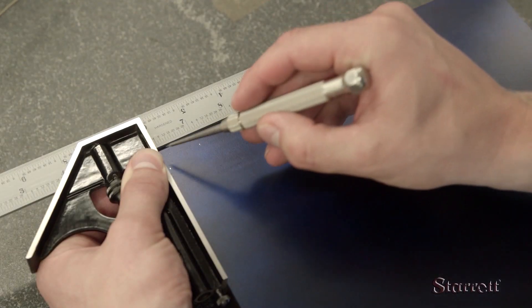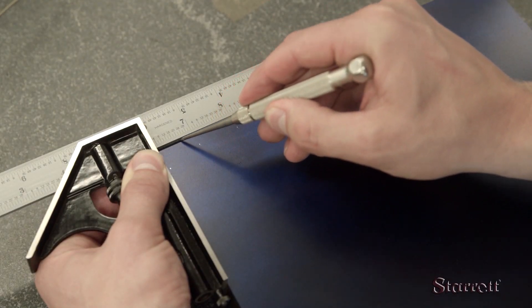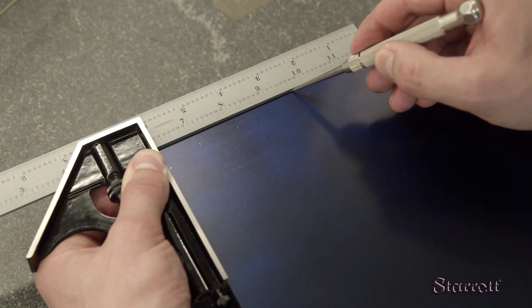With the square head attached to the rule, you can scribe a line precisely perpendicular to the part edge.